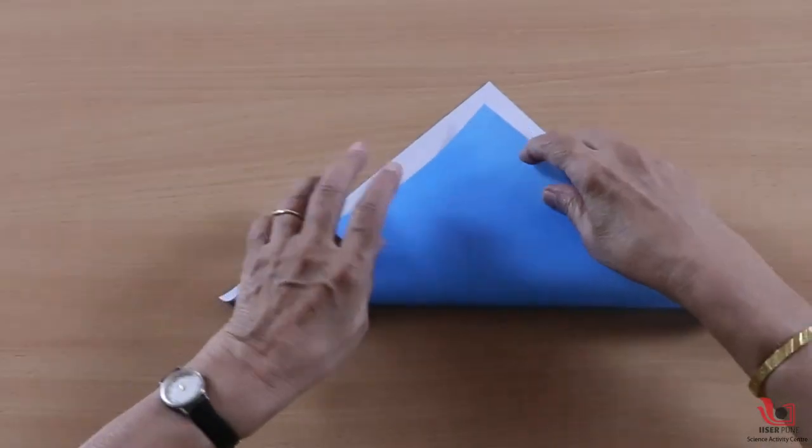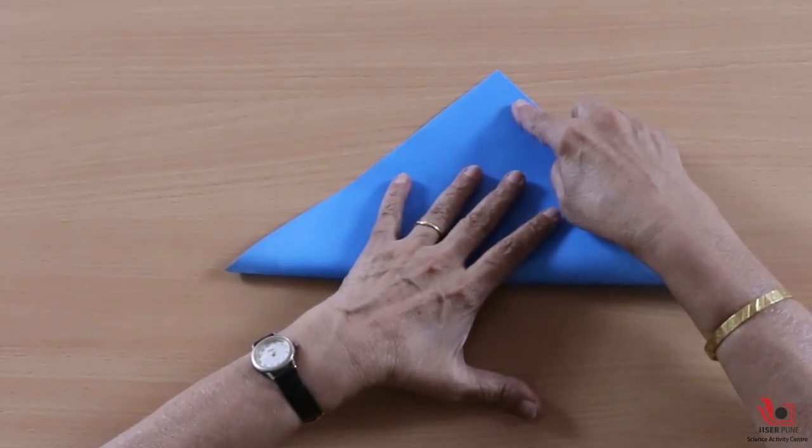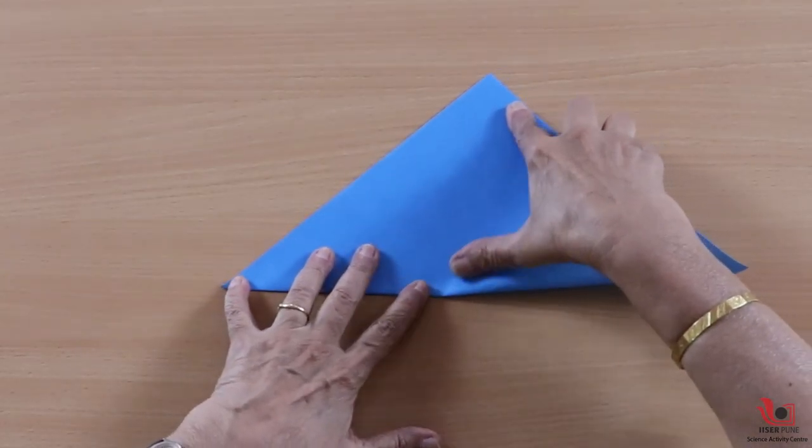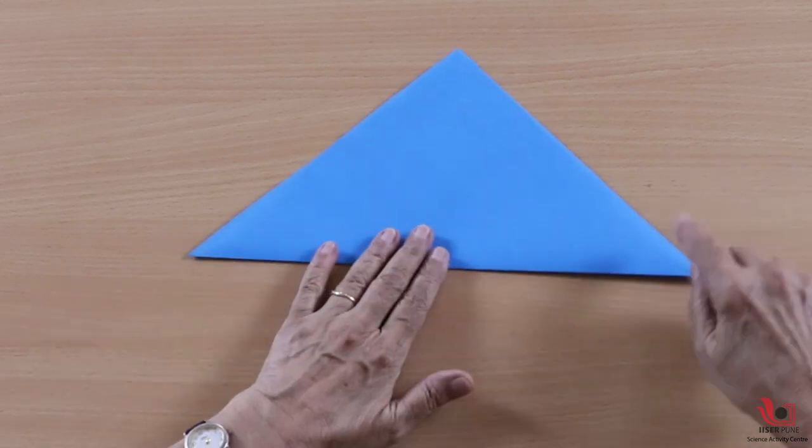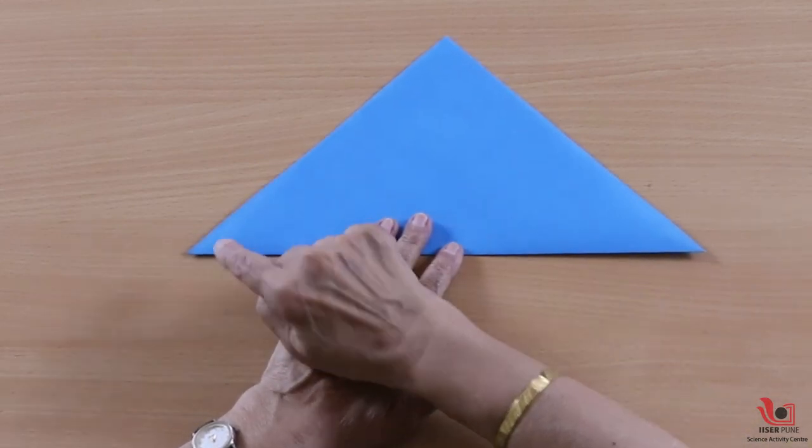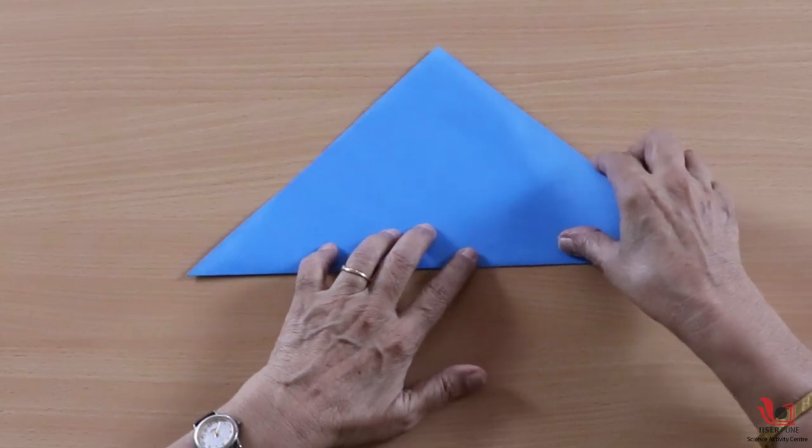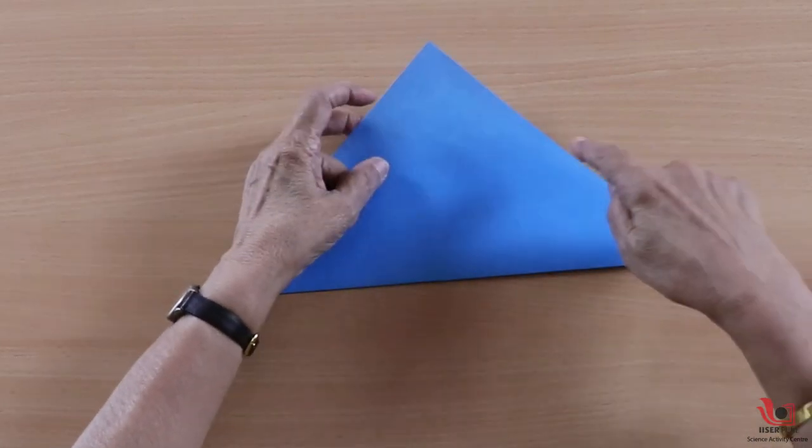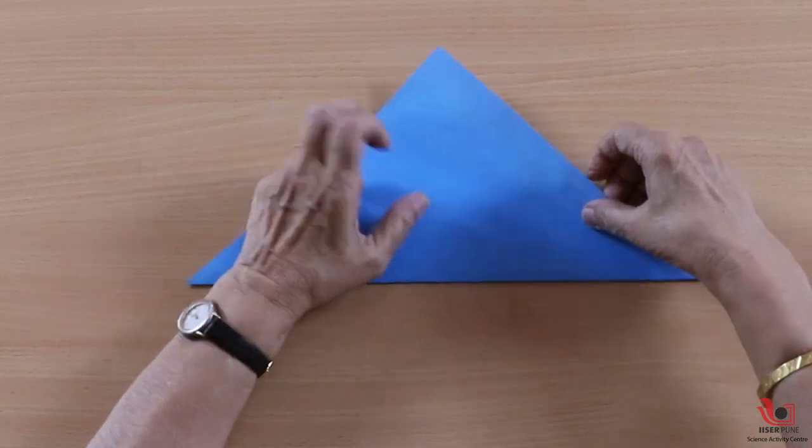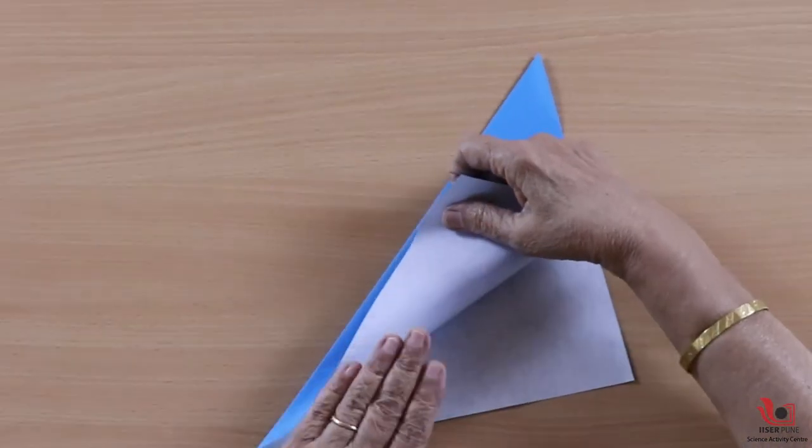See, this is a square paper. I am joining first this point to this point, so I am actually bisecting two right angles into 45-45 degrees at the center. Then I will divide the upper part of this angle again.